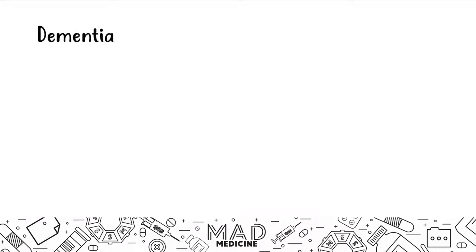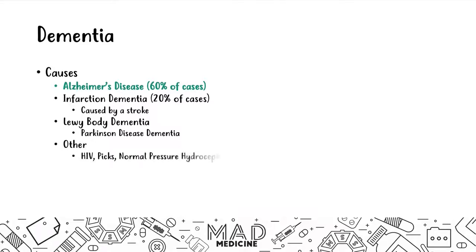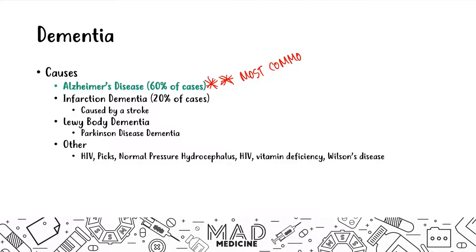When it comes to causes of dementia, the main cause is Alzheimer's disease — 60% of patients with Alzheimer's disease are also going to have dementia. Other causes include infarction dementia, which is 20% of cases and occurs when a stroke causes dementia. The third type is Lewy body dementia, a type of Parkinson's disease dementia. Finally, other causes include HIV, Pick's disease, normal pressure hydrocephalus, and more. The most important thing to commit to memory is that Alzheimer's dementia is the most common form.